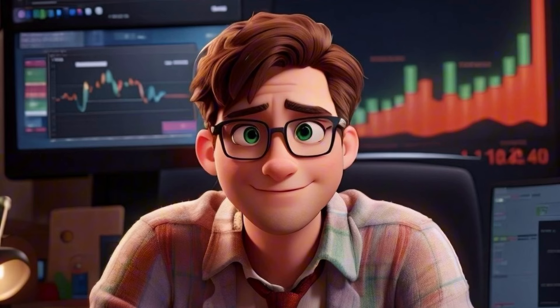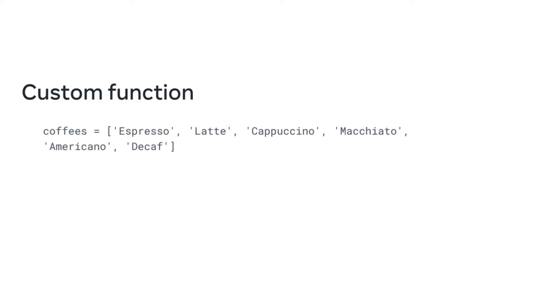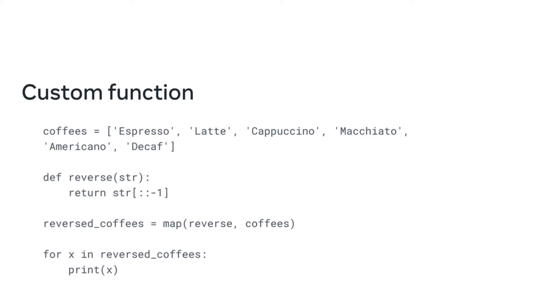The great thing about functional programming is that the logic behind certain tasks is already built in for you. Functions are reusable and save a lot of development time. But you can also create your own functions specific to your own requirements. Imagine you want to spell the names of coffees backwards — you can create your own simple reverse function to do this. Define the function, call it reverse, and assign the variable str to it. Return the value of str with a slice function. Then assign a variable to get the result of the map function, which accepts the reverse function as its first argument and the iterable, coffees, as its second.